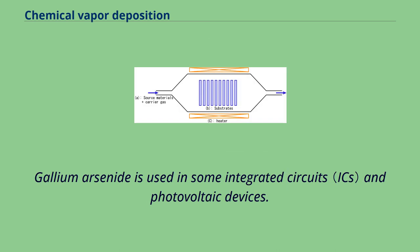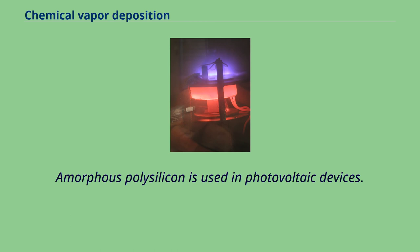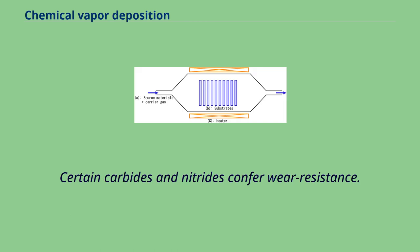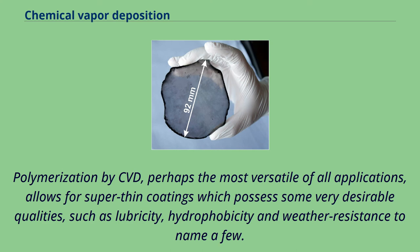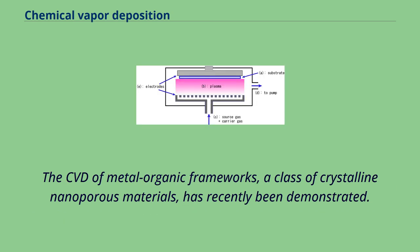Gallium arsenide is used in some integrated circuits and photovoltaic devices. Amorphous polysilicon is used in photovoltaic devices. Certain carbides and nitrides confer wear resistance. Polymerization by CVD, perhaps the most versatile of all applications, allows for super-thin coatings which possess some very desirable qualities, such as lubricity, hydrophobicity and weather resistance to name a few. The CVD of Metal Organic Frameworks, a class of crystalline nanoporous materials, has recently been demonstrated.